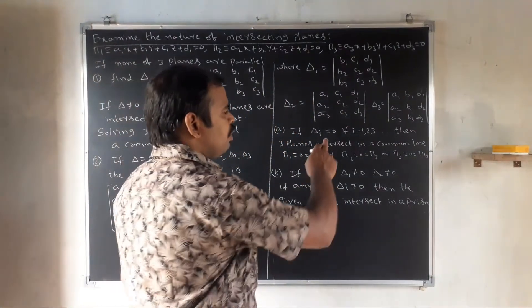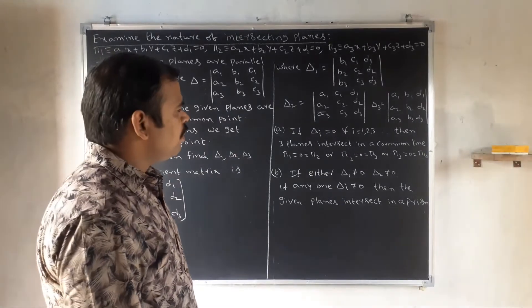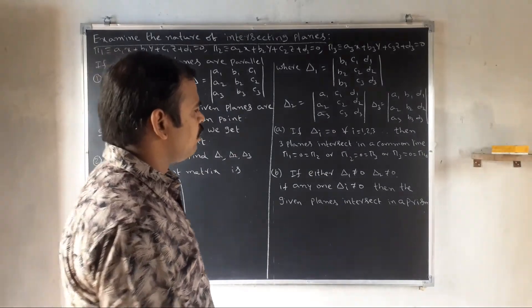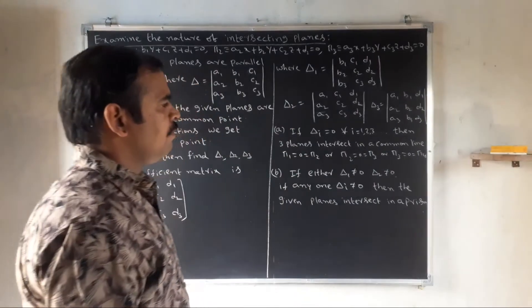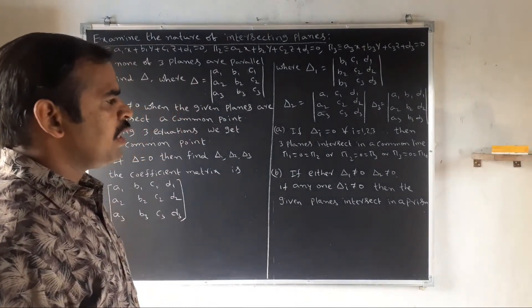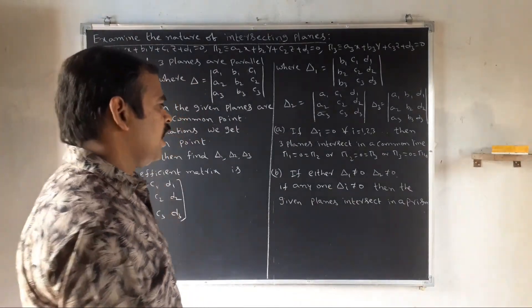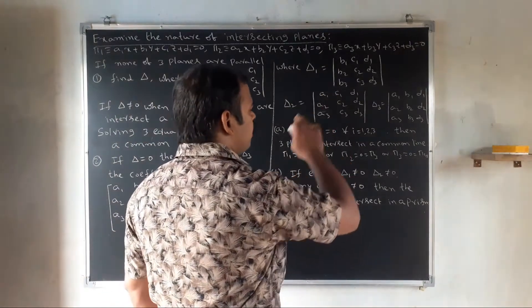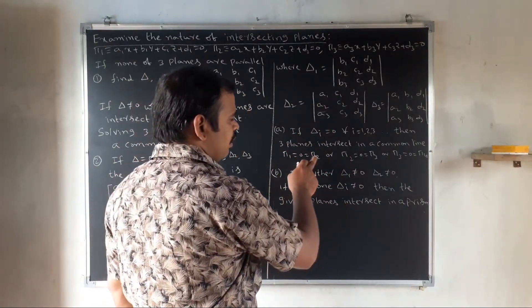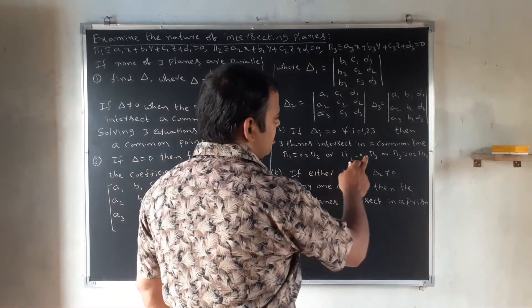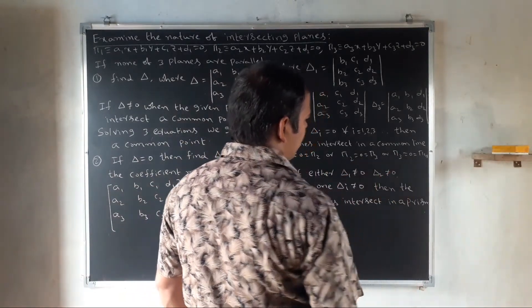If delta equals zero and all of delta1, delta2, and delta3 are also equal to zero, then the three planes intersect in a common line. The common line equation is expressed as φ1 = 0 = φ2, or φ2 = 0 = φ3, or φ3 = 0 = φ1 — that is, the intersection of any two of the planes.